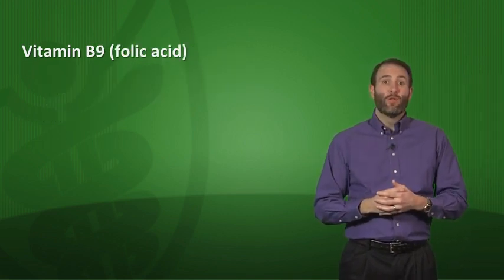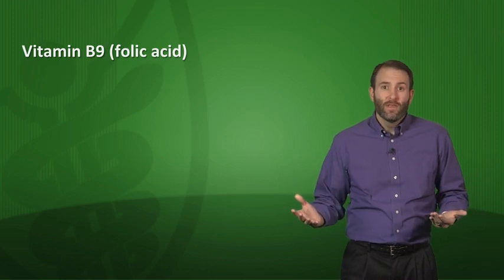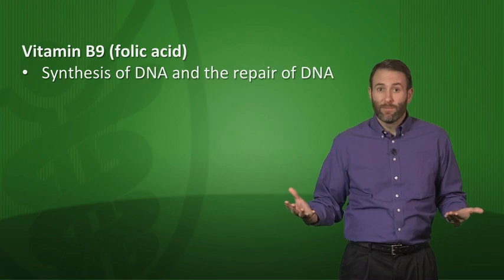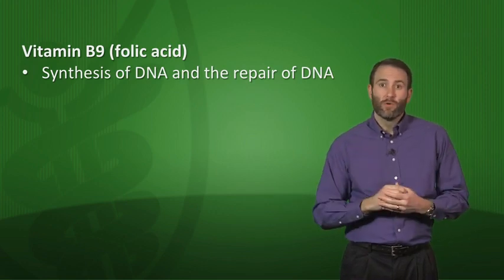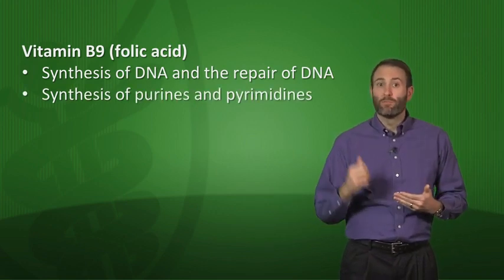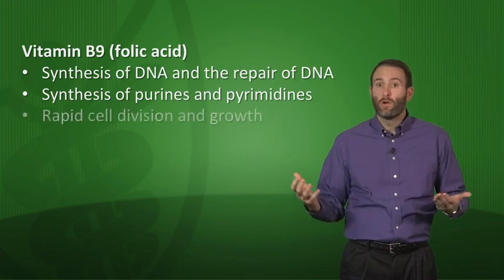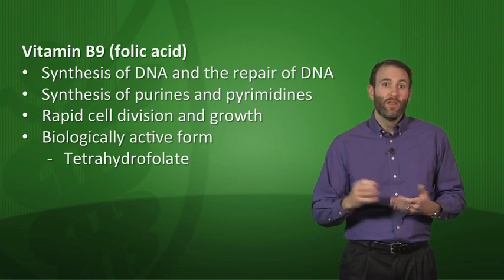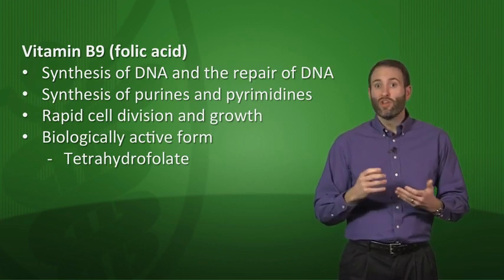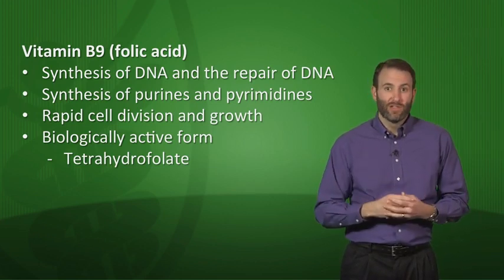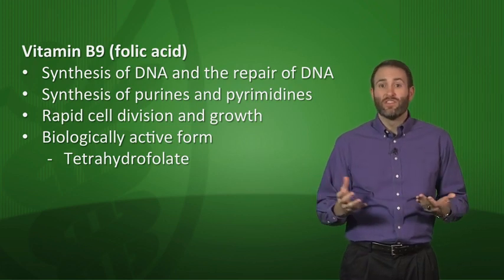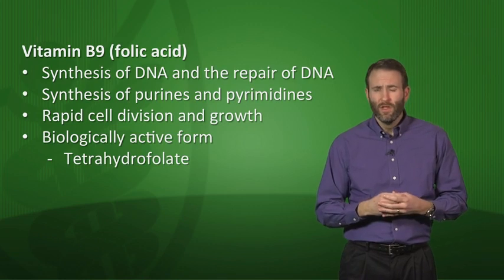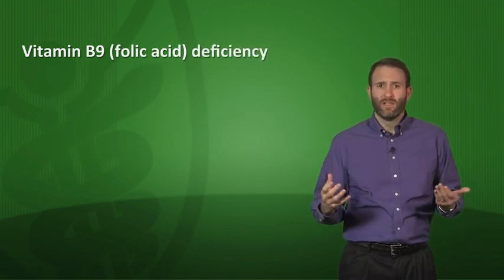Vitamin B9 is folic acid, sometimes called folate. Folic acid is crucial for DNA synthesis and repair, and especially important in the synthesis of purines and pyrimidines. It is very important for rapid cell division and growth. Its biologically active form is tetrahydrofolate, a coenzyme for one-carbon transfer or methylation reactions. Humans cannot synthesize their own folic acid and must get it through the diet.